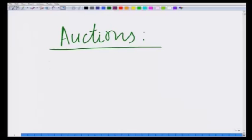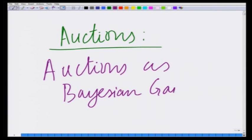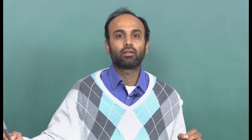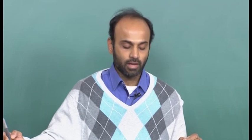We are going to start modeling auctions as Bayesian games — that is, games which involve uncertainty. Throughout our discussion of auctions, we are going to focus on probabilities and random variables. In particular, we are always going to use the uniform random variable. Therefore, it is important to understand the properties of the uniformly distributed random variable.